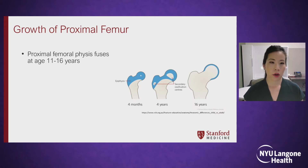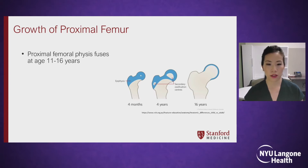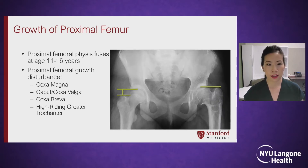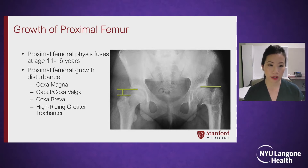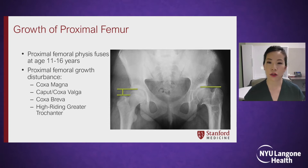Growth of the proximal femur is also mostly due to the proximal femoral physis, which is also active until early adolescence. Disturbance of the proximal femoral physis can also lead to proximal femoral dysplasia, including coxa magna, coxa valga, coxa breva, and a high-riding greater trochanter.